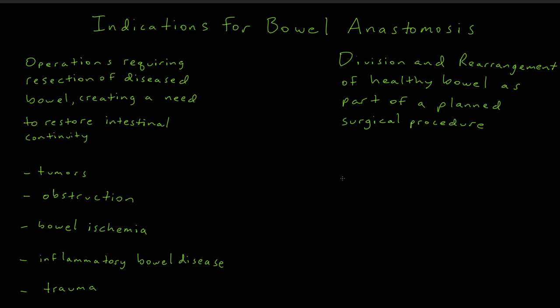Conversely, some operations require division and rearrangement of healthy portions of bowel. This maneuver is characteristic of operations that rearrange the bowel in a non-linear fashion by creating a Roux limb that is used to alter the flow of biliopancreatic secretions. We will not discuss the specifics of Roux limbs in this video; they are presented as an example of another type of indication for bowel anastomosis.